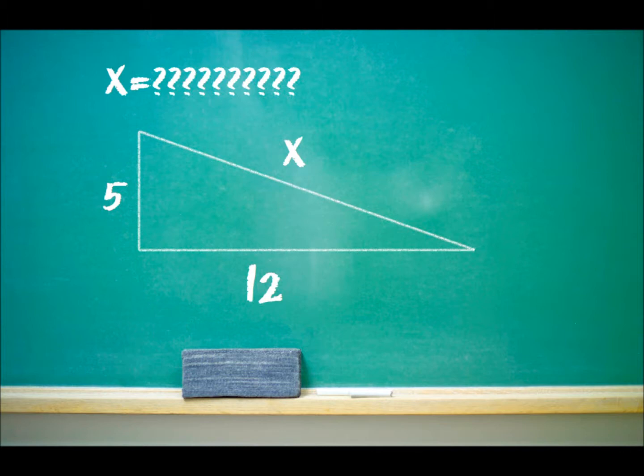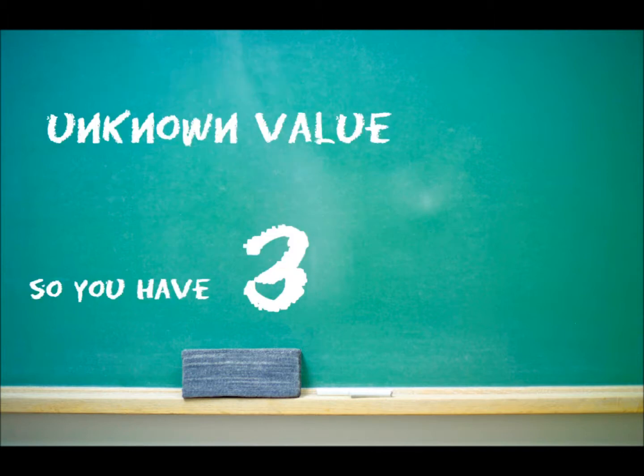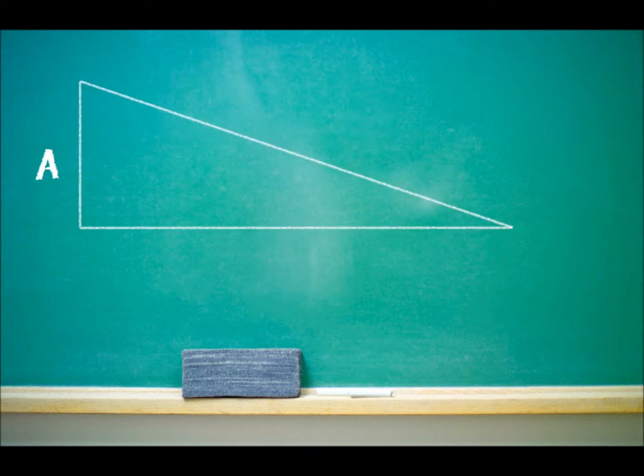In the right triangle, given two sides, use the Pythagorean theorem. You can find unknown values, so you have three. Label all the sides with an A, B, and C.